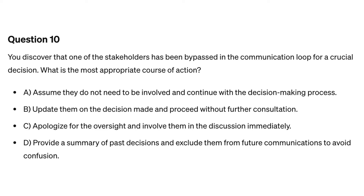Question ten. You discover that one of the stakeholders has been bypassed in the communication loop for a crucial decision. What is the most appropriate course of action? A. Assume they do not need to be involved and continue with the decision-making process. B. Update them on the decision made and proceed without further consultation. C. Apologize for the oversight and involve them in the discussion immediately. D. Provide a summary of past decisions and exclude them from future communications to avoid confusion.